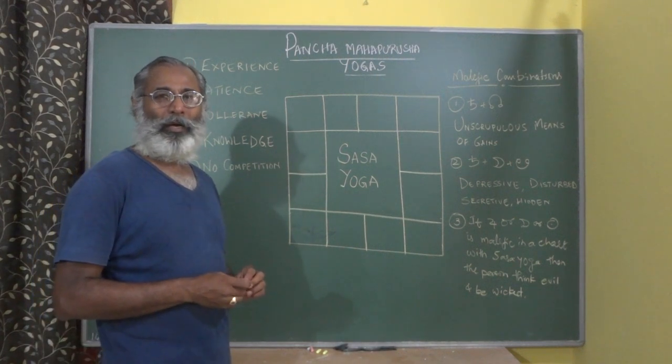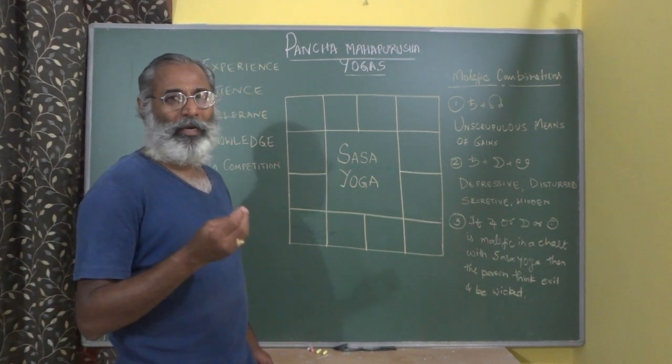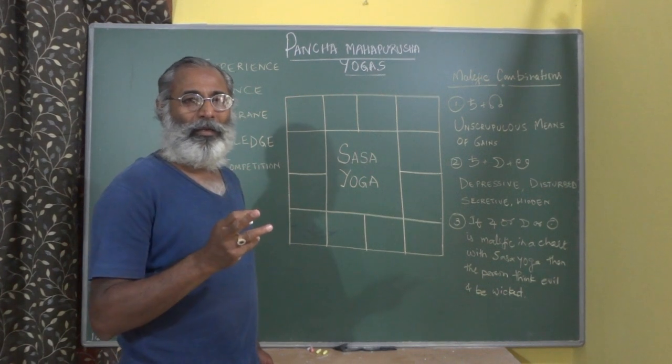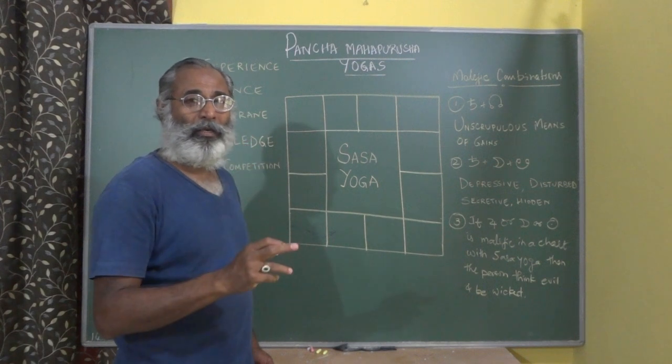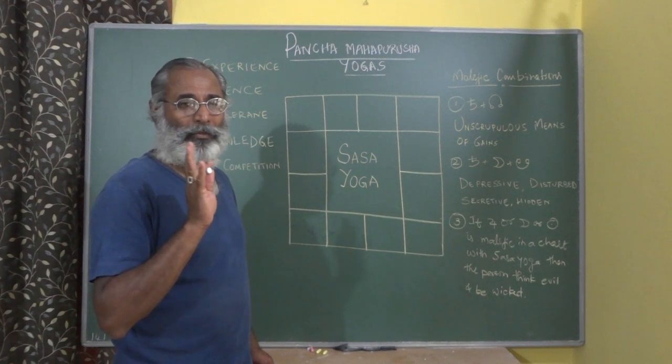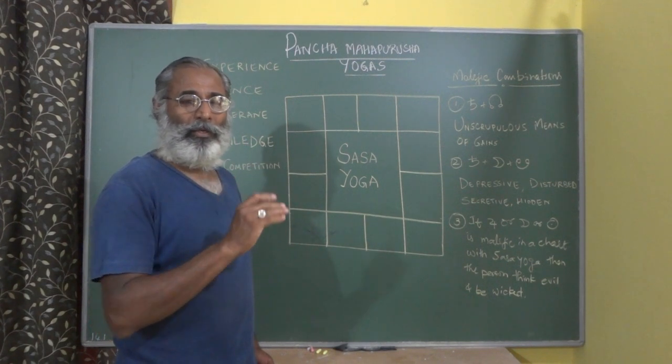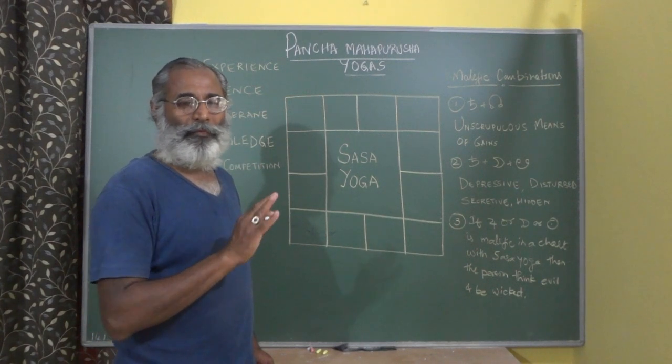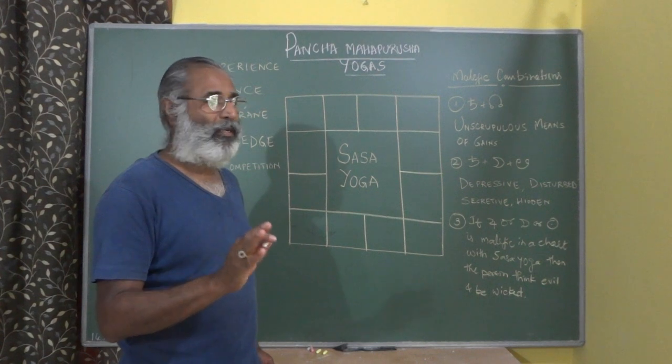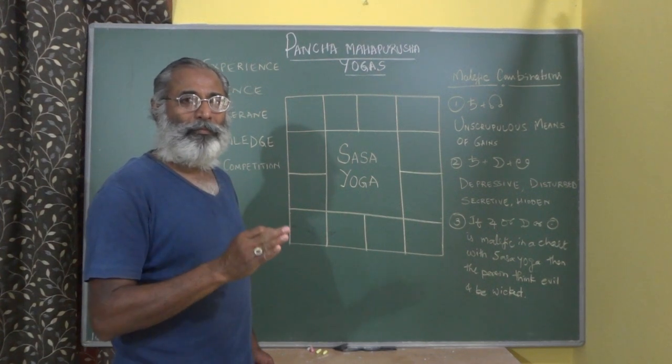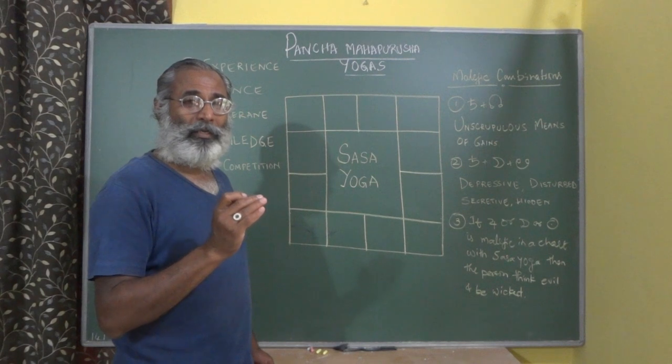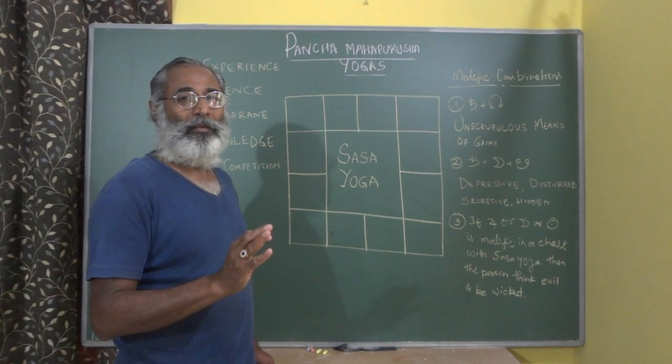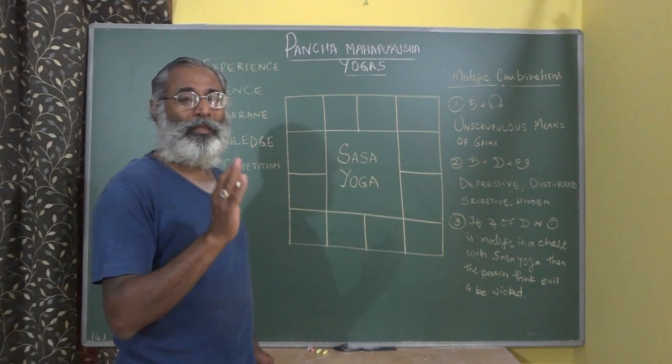How does Sasa Yoga happen? It happens if Saturn is placed in the Kendra and if it is exalted or in its own sign. There are two conditions: though Saturn is in own sign or in exaltation position, if it is not in the Kendra from the Ascendant, then there is no Sasa Yoga. It should be in Kendra from the Ascendant and this should be seen in the Bhava Kundali.